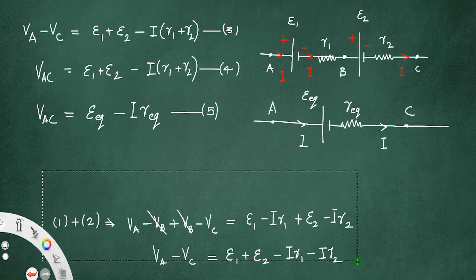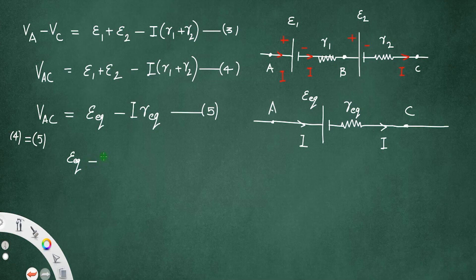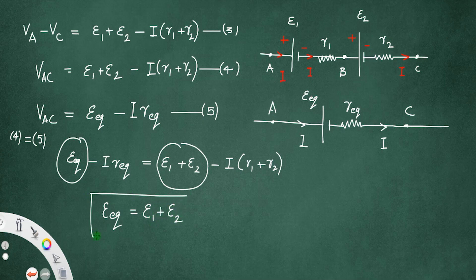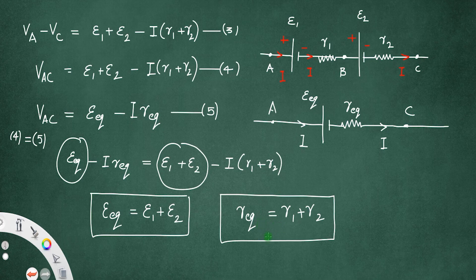When we compare equations 4 and 5 — since both have VAC on the left-hand side — we get E-equivalent minus I times R-equivalent equals E1 plus E2 minus I times (R1 plus R2). Comparing both sides, E-equivalent equals E1 plus E2, and R-equivalent equals R1 plus R2. So when two cells are connected in series, their equivalent EMF is the sum of their individual EMFs, and their equivalent internal resistance is the sum of their individual internal resistances.